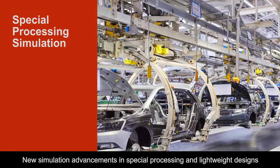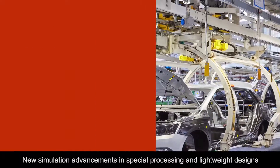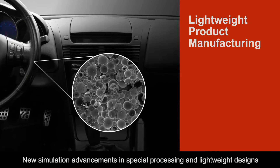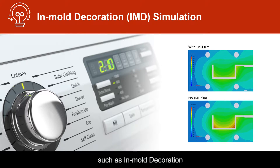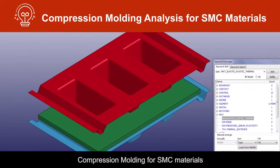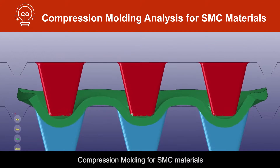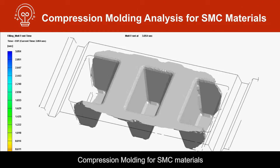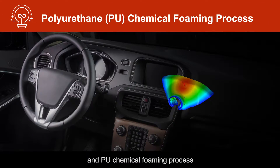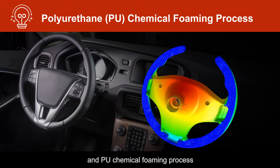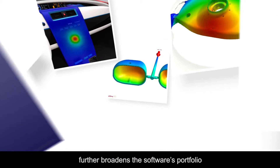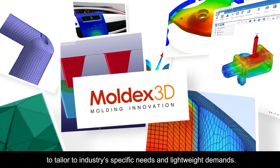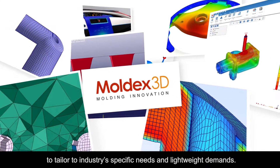New simulation advancements in special processing and lightweight designs — such as in-mold decoration, compression molding for SNC materials, and the PU chemical foaming process — further broaden the software's portfolio to tailor to industry-specific needs and lightweight demands.